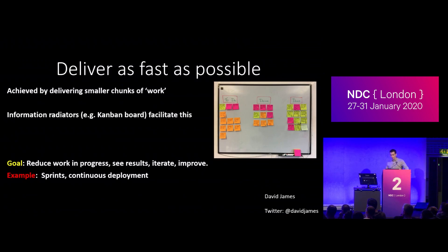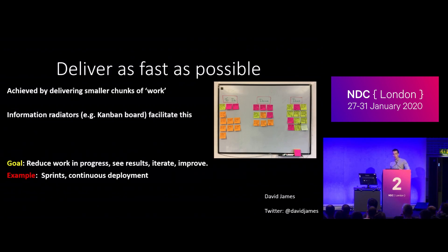Deliver as fast as possible. As part of the agile software delivery cycle, you're probably used to splitting work into small chunks. Those of you who attended Ian Cooper's session this morning will have heard about microservices — making people able to deploy their code independently of other teams means you can move much faster. To facilitate this, there are things called information radiators that show people where you are, where you're going, and what you're doing. I always encourage people to over-communicate, because there's always information inside someone's head that everybody else needs to know.